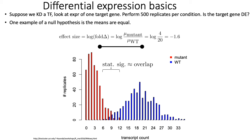Effect size can be roughly understood as the gap between the means of the blue curve versus the red curve. More formally, you can measure effect size as the log fold change — in this case the log ratio of the expression of a gene in the mutant versus wild type. Here that would come out to something like minus 1.6, which tells you there's a drop in the expression level of this target gene.